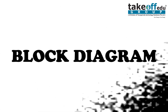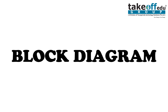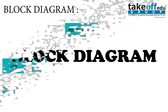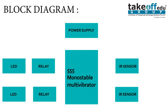Next, let's see the block diagram of our project. In the block diagram there is a power supply circuit, a monostable multivibrator circuit, two IR sensors, two relays, and two LEDs.